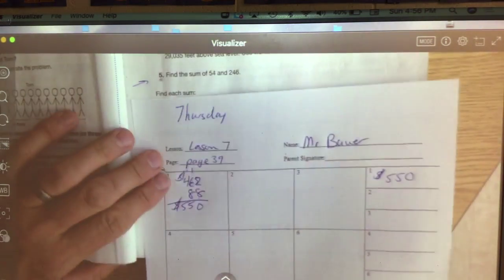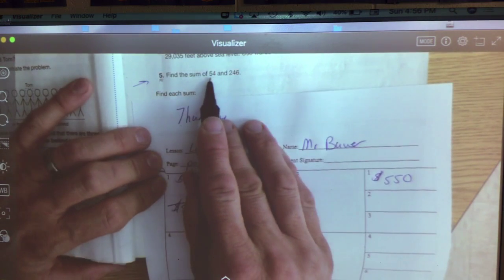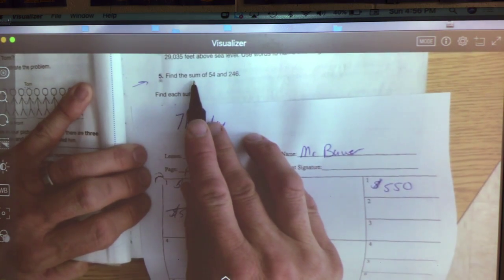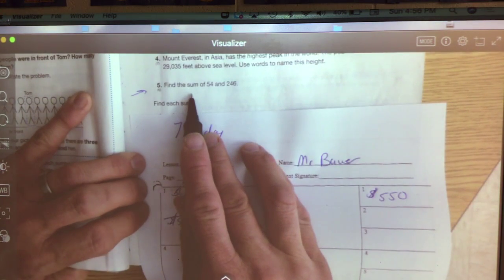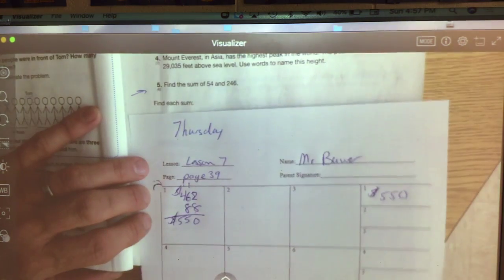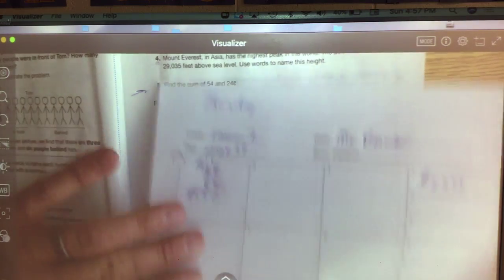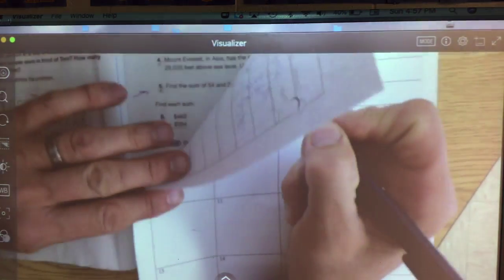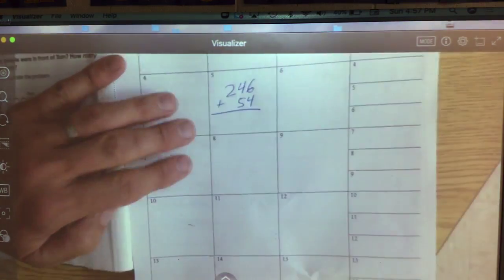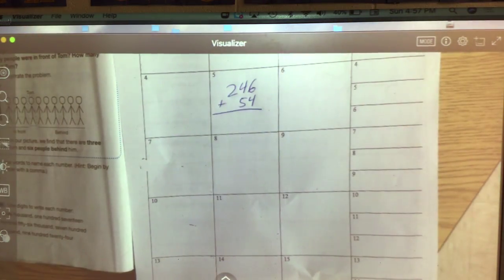Jump to number 5. It says find the sum of 54 and 246. Now sum is just a fancy word that says add these up. So this is your addition algorithm again. I like to put the 3 digit number on top. 246 plus 54. Sum means add, so let's add those up.